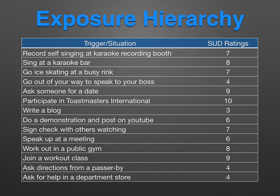In the treatment of OCD, we collect a list of situations and intrusive thoughts that trigger discomfort. These are arranged into an exposure hierarchy — a list of the main things that lead to anxiety or discomfort, arranged by severity. These triggers are rated using the Subjective Units of Discomfort Scale, SUDS, a scale ranging from 1, meaning almost no discomfort, to 10, the worst anxiety or discomfort possible.